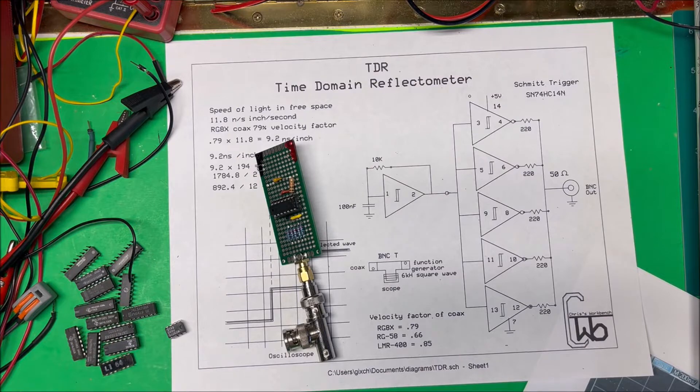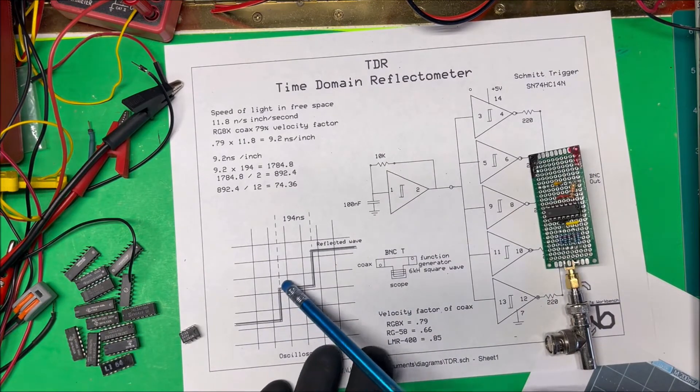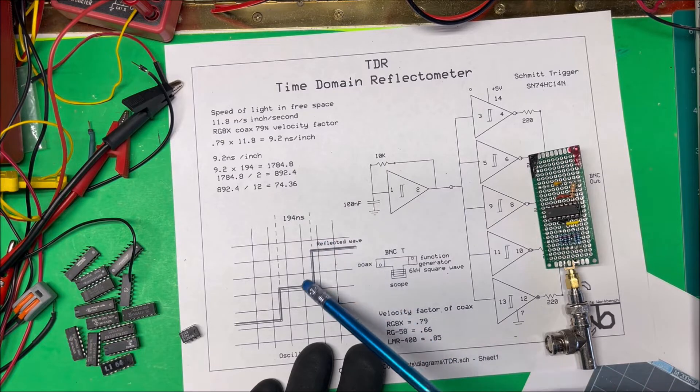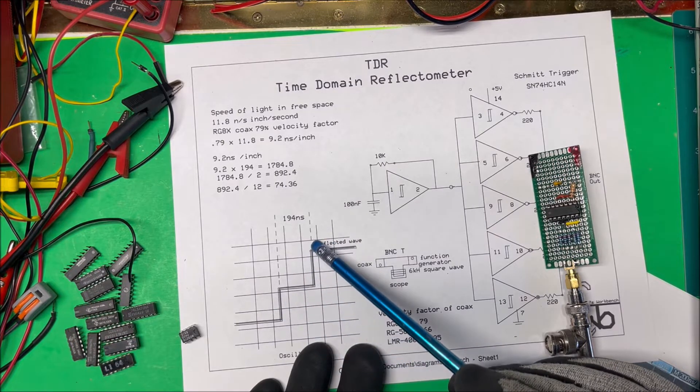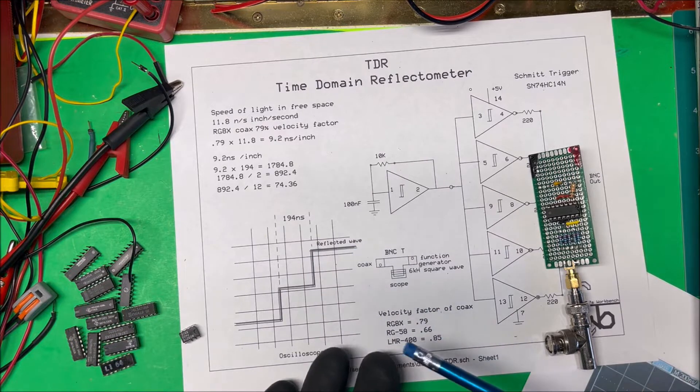Okay, so when it gets reflected back, here it is here where we're sending the signal down here. Now the reflected wave comes back and that voltage adds to this voltage, so it comes up here and that's our reflected wave.